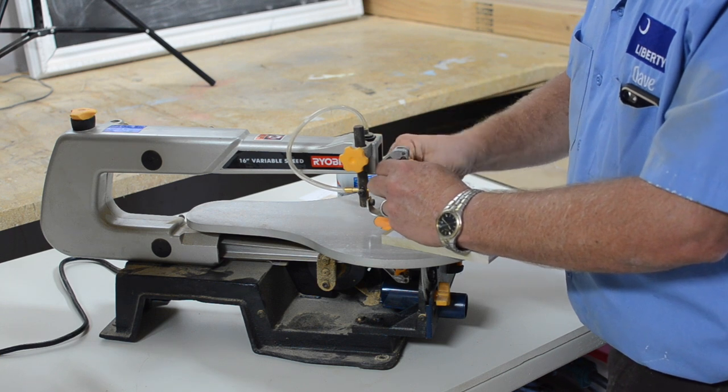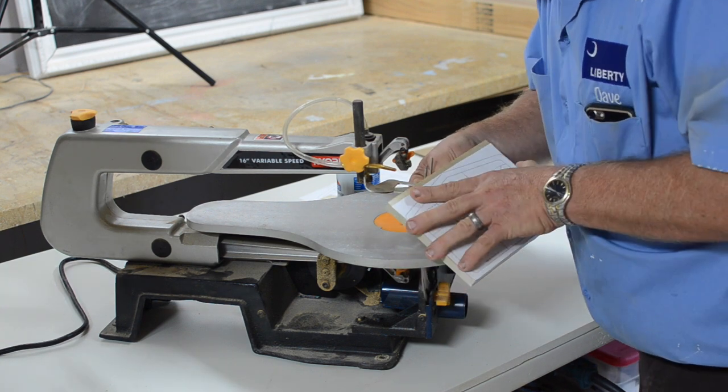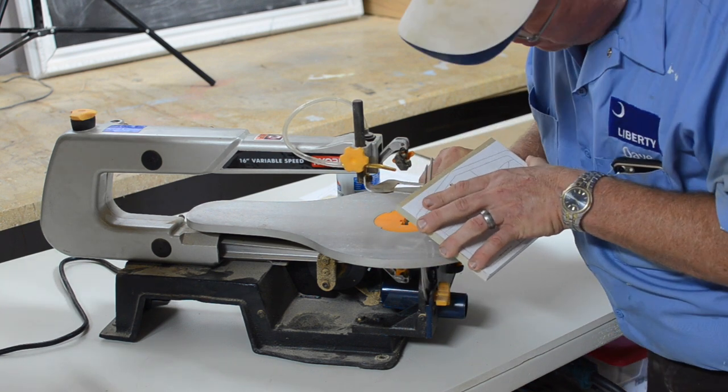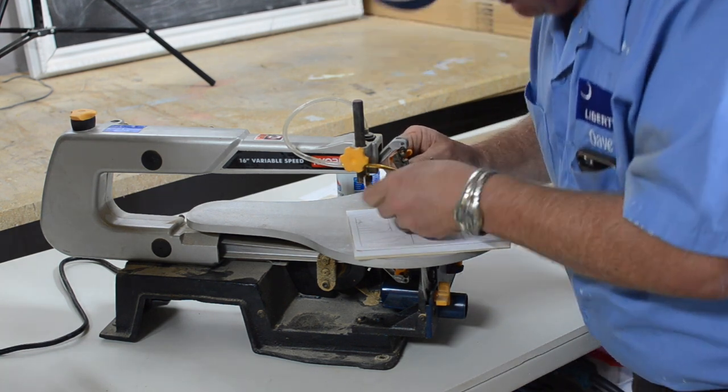Now it is time to use the scroll saw. To start, Dave first removed the blade from the scroll saw and threaded it through the hole. Once it was through, he attached the blade back on and adjusted the tension until it was just right.